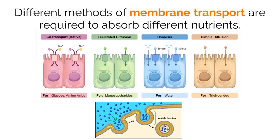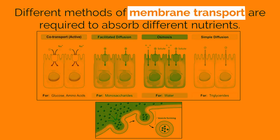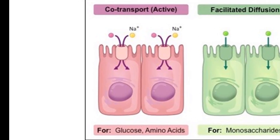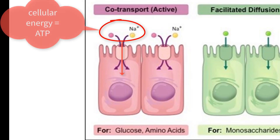Absorption of nutrients occurs in the small intestine. In order for these nutrients to be absorbed, they need to be taken in by cells and therefore will be moved across cell membranes. Different nutrients require different transport methods based on their size and structure. The first is co-transport, a type of transport that pairs two molecules together and moves them across the membrane using cellular energy. One is actively moved and the other tags along and is passively moved using the energy from the first one.